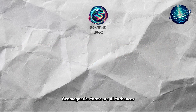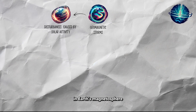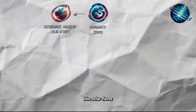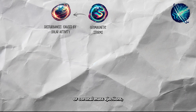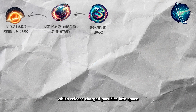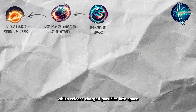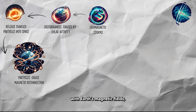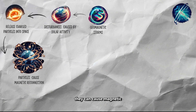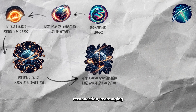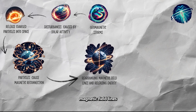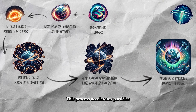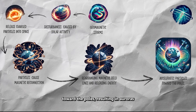Geomagnetic storms are disturbances in Earth's magnetosphere caused by solar activity like solar flares or coronal mass ejections, which release charged particles into space. When these particles collide with Earth's magnetic field, they can cause magnetic reconnection, rearranging magnetic field lines and releasing energy.